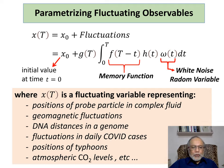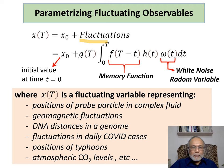Suppose we parameterize our random motion or fluctuations in this manner. So here we have a fluctuation, and in particular, let me represent the fluctuations in terms of an integral of this object. We have three functions here: a modulating function g, a memory function f, and a window function h.